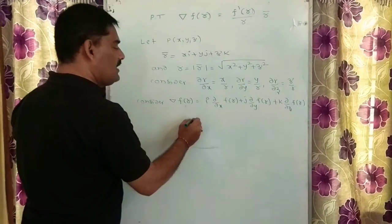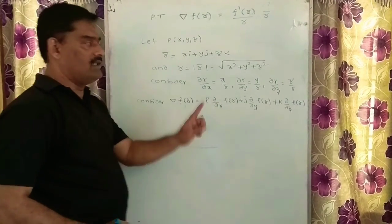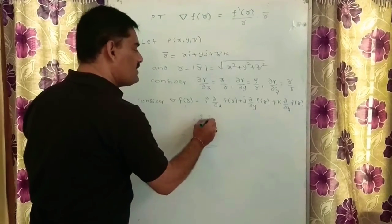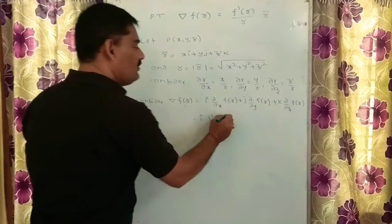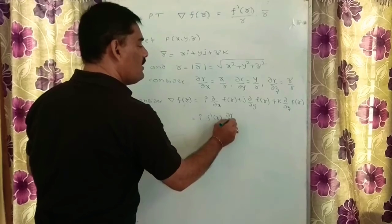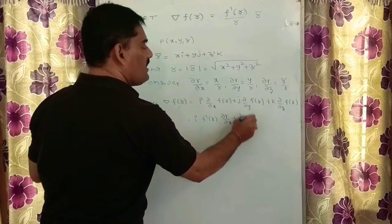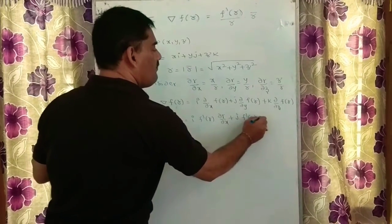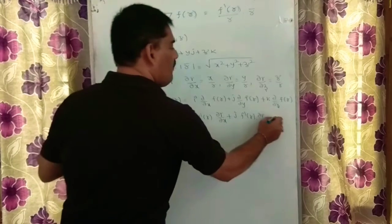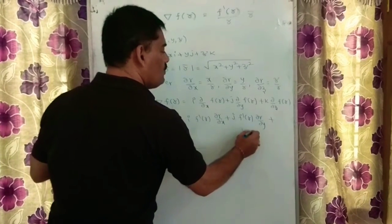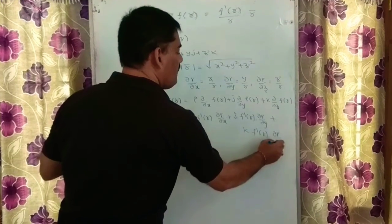Just finding the derivative value, i into derivative with respect to x. For any function, the derivative is denoted by f dash of r into dou r by dou x. Similarly, plus j f dash of r multiplied by dou r by dou y. Similarly, plus k into f dash of r times dou r by dou z.